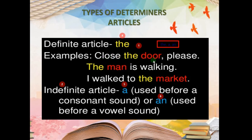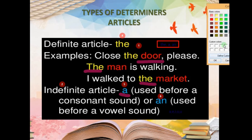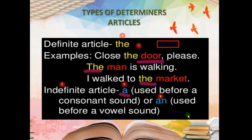Definite article 'the' is used for specific things. For example: 'Close the door please' — you are referring to a particular door. 'The man is walking' — referring to a specific man you can see. 'I walked to the market' — a specific market. The indefinite article 'a' is used before a consonant sound. There are five vowels: A, E, I, O, U. The article 'an' is used before a vowel sound. It is about the sound, not the letter.